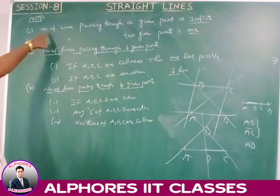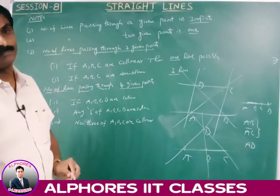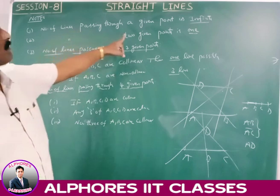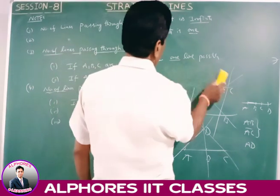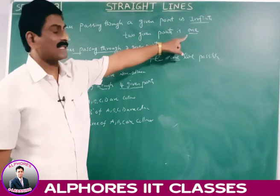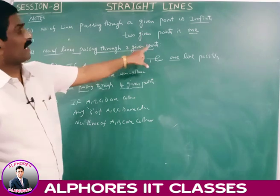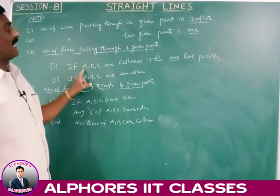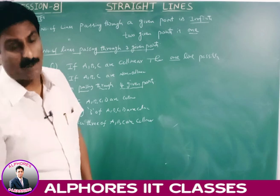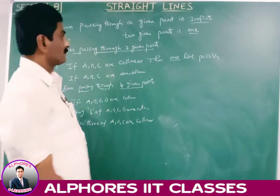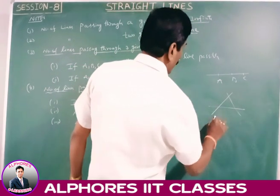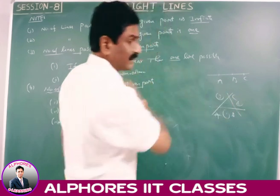Note point: the number of lines passing through a given point is infinite. The number of lines passing through two given points is one. For three given points: if A, B, C are collinear, only one line is possible; if A, B, C are non-collinear, they form a triangle and three lines are possible.